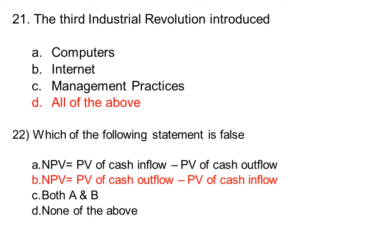Which of the following statement is false? Option A net present value is equal to present value of cash inflow minus present value of cash outflow. Option C both A and B, option D none of the above. The correct answer is option B: net present value is equal to present value of cash outflow minus present value of cash inflow.